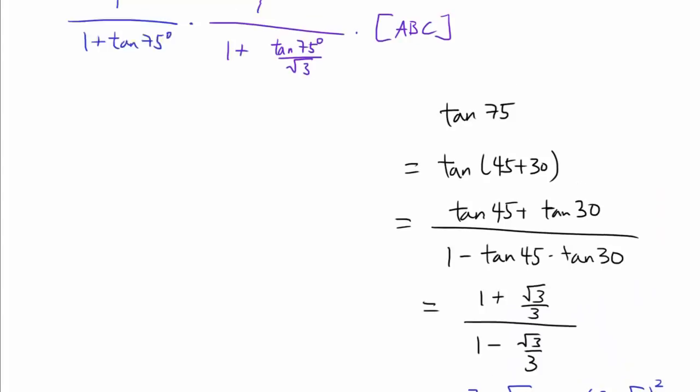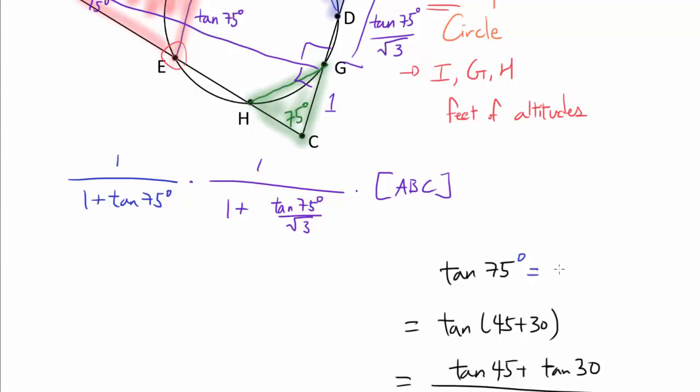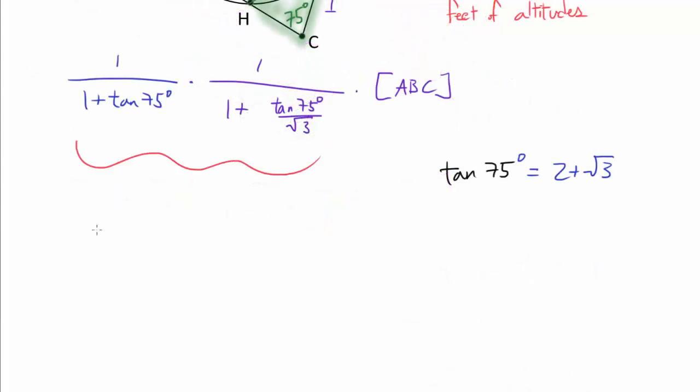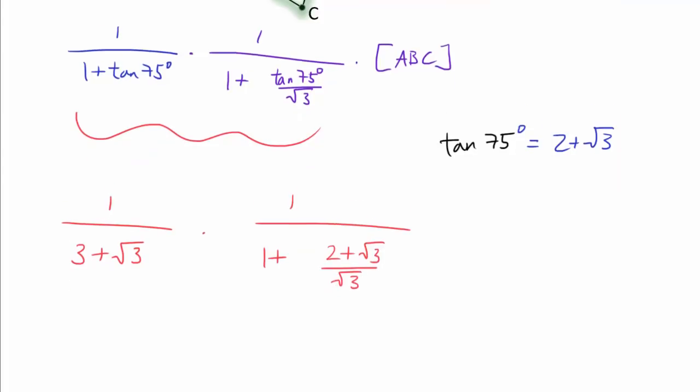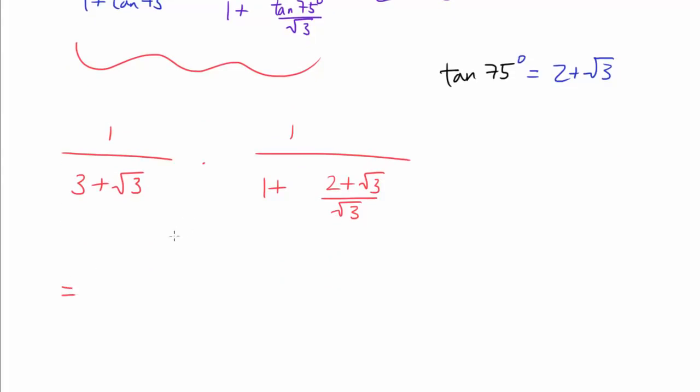So we have this nice expression for tangent of 75. So let's simplify these expressions. We have 1 over (3 plus square root of 3) times 1 over (1 plus (2 plus square root of 3) over square root of 3).